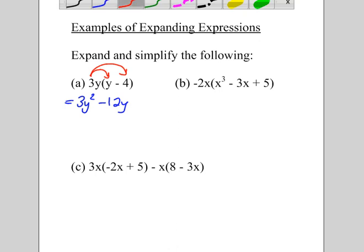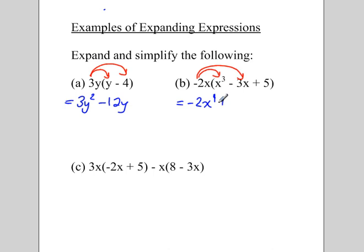So we're going to take this negative 2x that's in front and multiply by x cubed. And we're going to get negative 2x to the 4. Then we're going to get negative 2x times negative 3x. Be careful. A negative times a negative would be positive 6x squared.